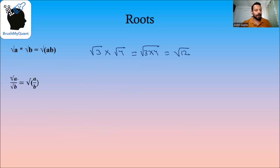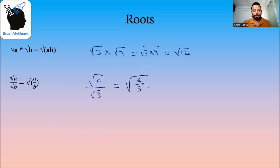√a divided by √b is equal to √(a/b). For example, √6 divided by √3 will become √(6/3), which is √2.